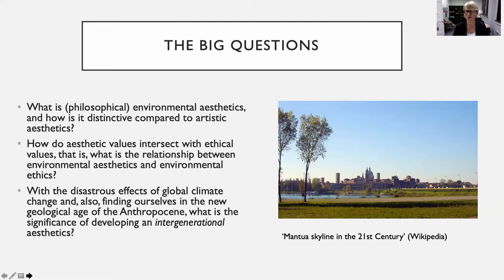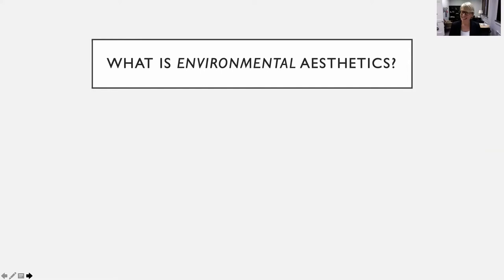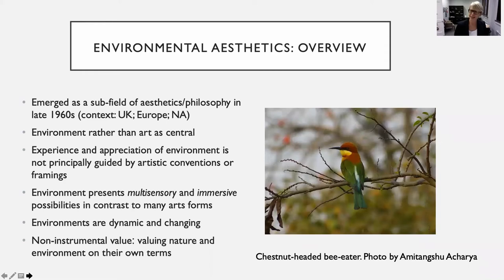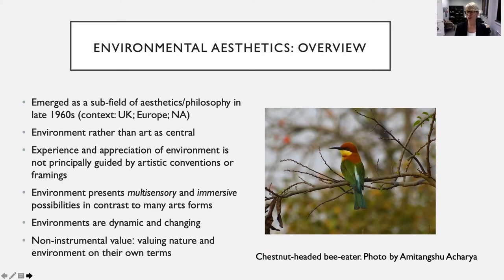Starting with the first big question: what is environmental aesthetics? It emerged as a subfield in aesthetics within philosophy in the late 1960s. Many people argue that Ronald Hepburn's seminal article 'Contemporary Aesthetics and the Neglect of Natural Beauty' was really a marker for the field getting underway. The context I'm discussing is the UK, Europe, and North America. An important point is that the environment is the central thing studied — and of course it's not one thing, it's many environments, many places, many landscapes globally.